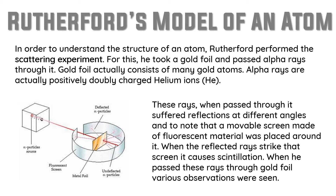The next thing is alpha particles. Alpha particles are positively charged particles — note that point. Alpha rays or alpha particles are positively charged, and they are doubly charged helium ions. Their atomic mass is 4U, which is a little bit heavier than protons. Protons also have a positive charge, and alpha rays also have a positive charge.